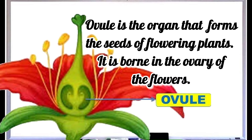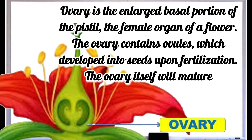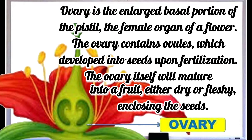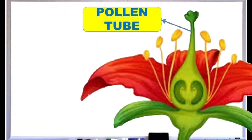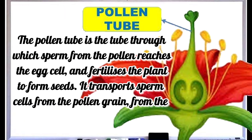The mature stigma secretes a fluid that stimulates the pollen grains to germinate. Ovule: the ovule is the organ that forms seeds of flowering plants; it is borne in the ovary of flowers. Ovary: the ovary is the enlarged basal portion of the pistil, the female organ of a flower. The ovary contains ovules which develop into seeds upon fertilization.